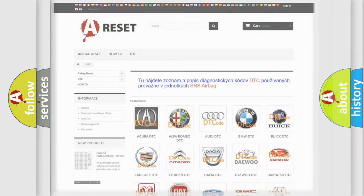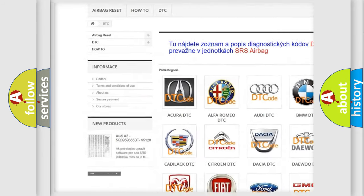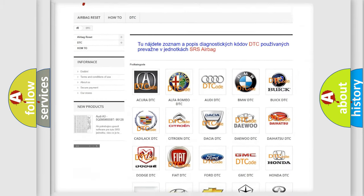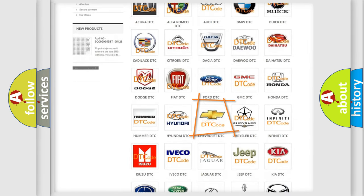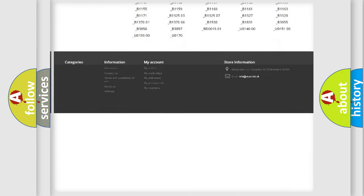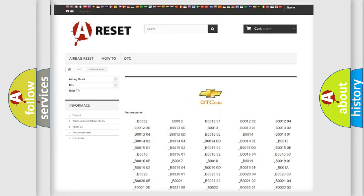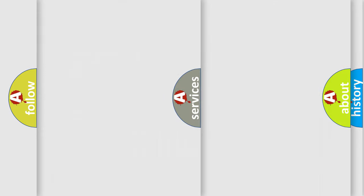Our website airbagreset.sk produces useful videos for you. You do not have to go through the OBD2 protocol anymore to know how to troubleshoot any car breakdown. You will find all the diagnostic codes that can be diagnosed in Chevrolet vehicles, and also many other useful things.